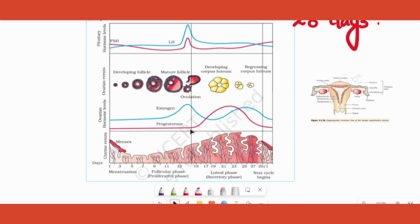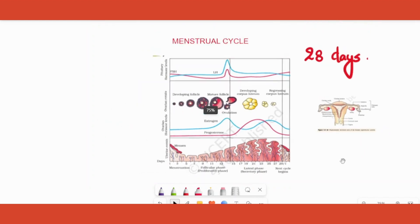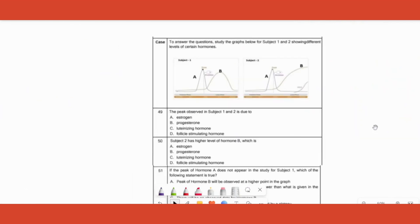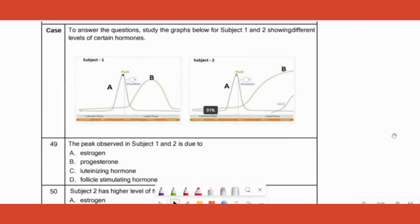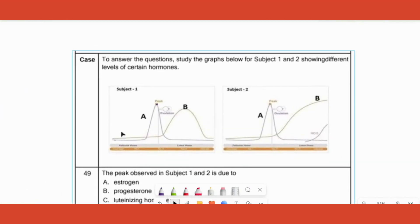Let's recap the hormonal part again. Which all are the four hormones? LH and FSH which are pituitary hormones, estrogen and progesterone which are ovarian hormones, produced by the ovary and produced by the pituitary gland.